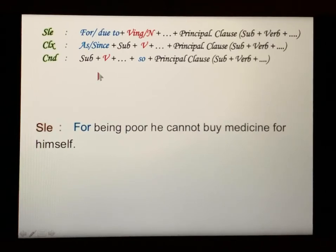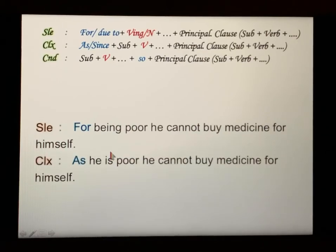For the complex sentence, we start with 'as' then the subject. The subject is 'he'. Since the sentence is in present tense, we write: As he is poor, he cannot buy medicine for himself.